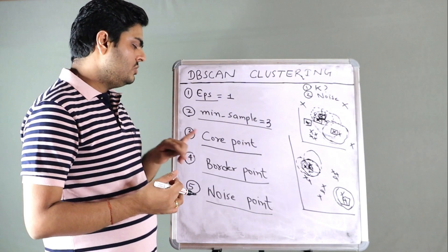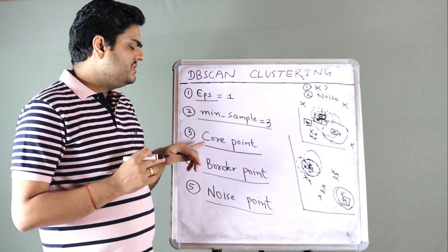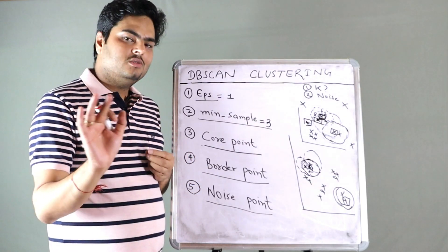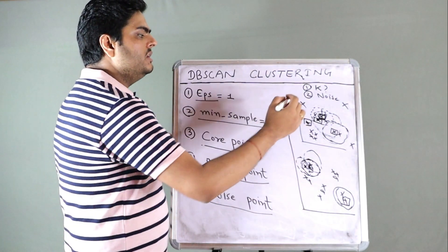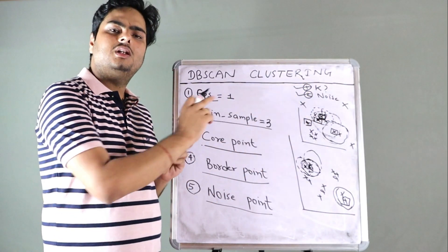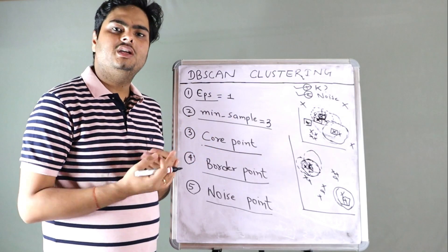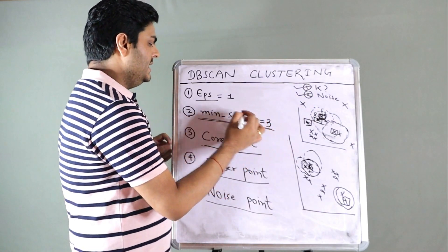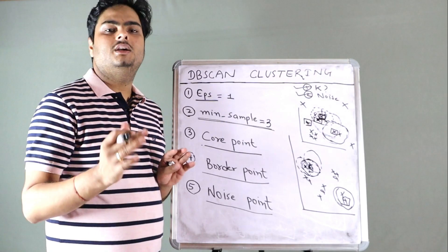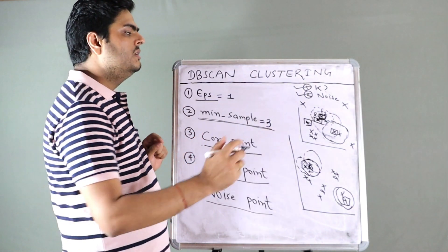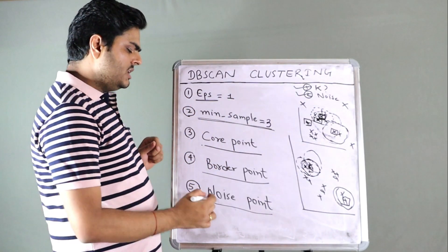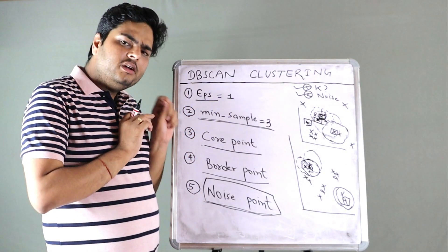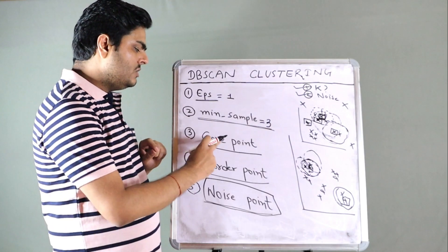Iteratively it categorizes all points as core, border, or noise. Core and border points become part of one or another cluster; noise points are not associated with any cluster. This is how DBSCAN addresses the two K-means problems: we don't give the value of K in advance — we simply tell the algorithm minimum samples is 3 and epsilon is 1, and it finds how many clusters exist. And if there is noise in the data, it goes into the noise category and is not forced into any cluster.